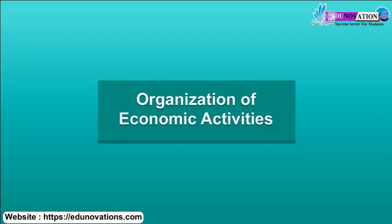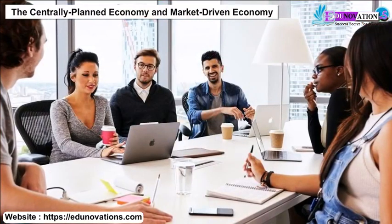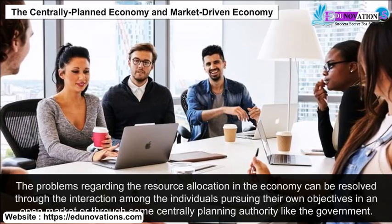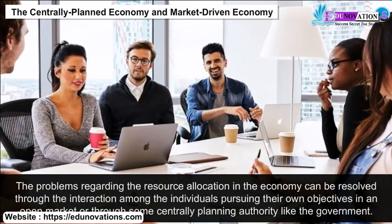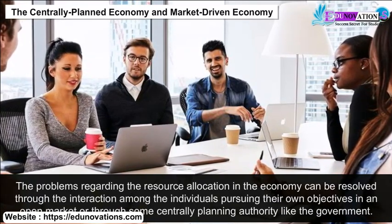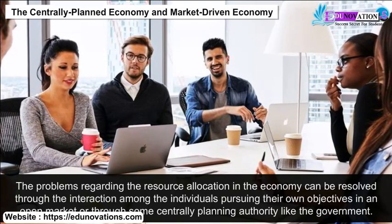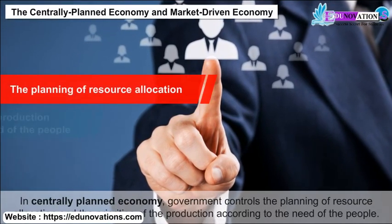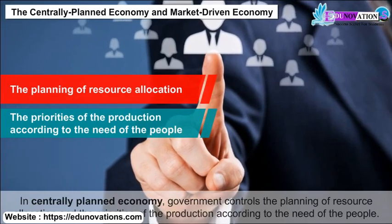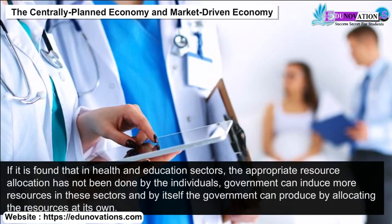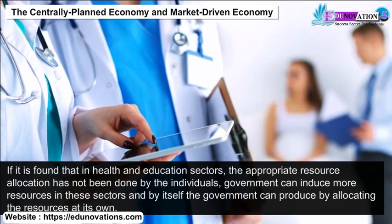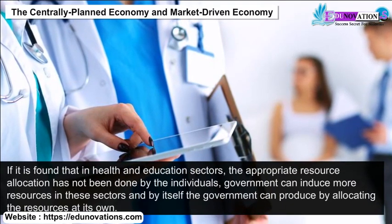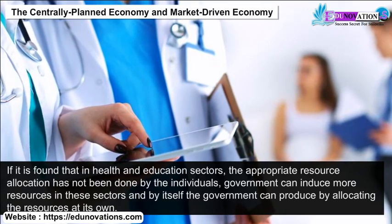Organization of economic activities: the centrally planned economy and market-driven economy. Problems regarding resource allocation can be resolved through interaction among individuals pursuing their own objectives in an open market, or through a central planning authority like the government. In a centrally planned economy, the government controls the planning of resource allocation and the priorities of production according to the needs of the people. For example, if health and education sectors lack appropriate resource allocation, the government can direct more resources into these sectors and produce by allocating resources on its own.